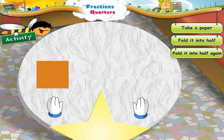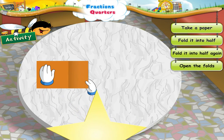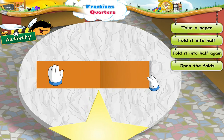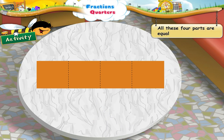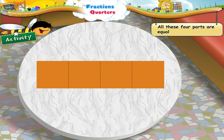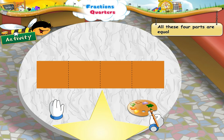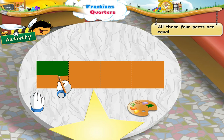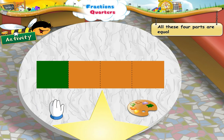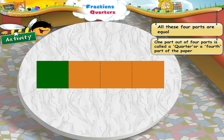We get a smaller piece of paper. Now, after opening the folds, what we see is four parts. All these four parts are equal. Let us colour one part out of the four parts. One part out of four parts is called a quarter or a fourth part of the paper.